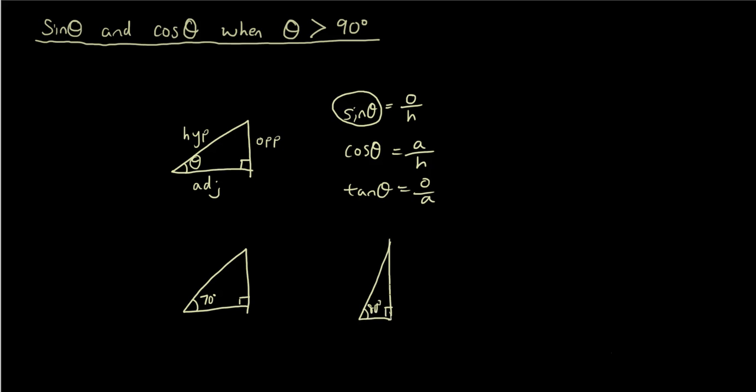Right, but so theta pretty much is always smaller than 90 degrees. Now what happens when theta is equal to 90 degrees?